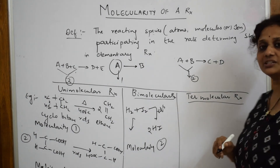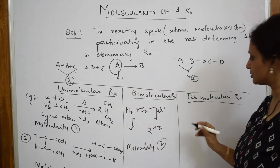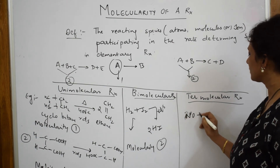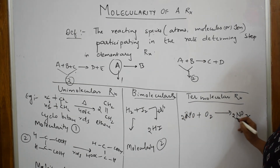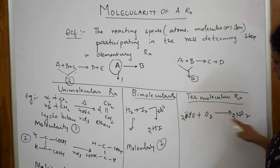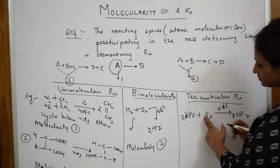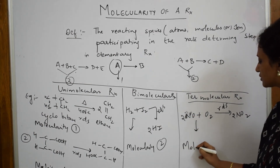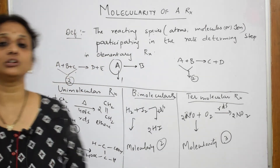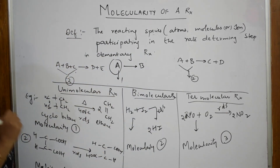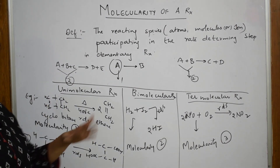For termolecular reactions — 'term' means three — suppose I take 2NO plus O2 giving 2NO2. How many molecules are participating in the RDS? Two plus one: three molecules participating. Hence the molecularity of this reaction is three — that is why these are called tri molecular or termolecular reactions. Remember that the reaction should be balanced; if it is not balanced, the number of molecules will change.